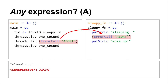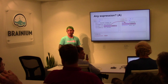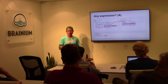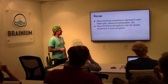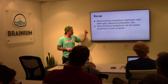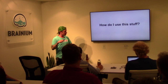Audience question: does the behavior have anything to do with it being in the IO monad, or could it be any expression? Answer: any expression — evaluating any expression could result in an asynchronous exception. I could be adding 1 plus 2 plus 3 plus 4, and that could be the expression being evaluated when someone throws to the thread, replacing it with an asynchronous exception. Another question: can you catch asynchronous exceptions? Yes — I'm going to talk about exactly that. They represent user interrupts, resource exhaustion, etc., and they can be raised anywhere in your program — pure code or impure code.